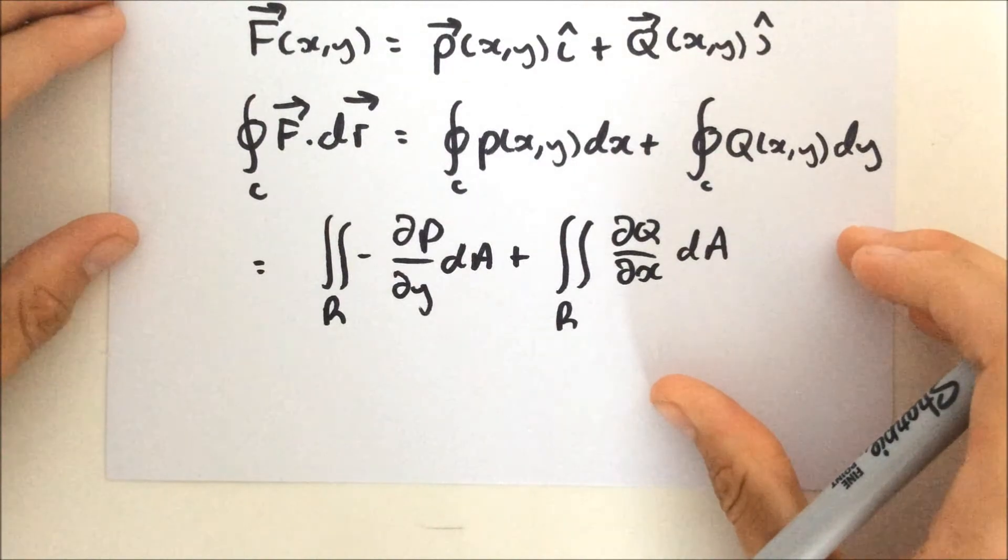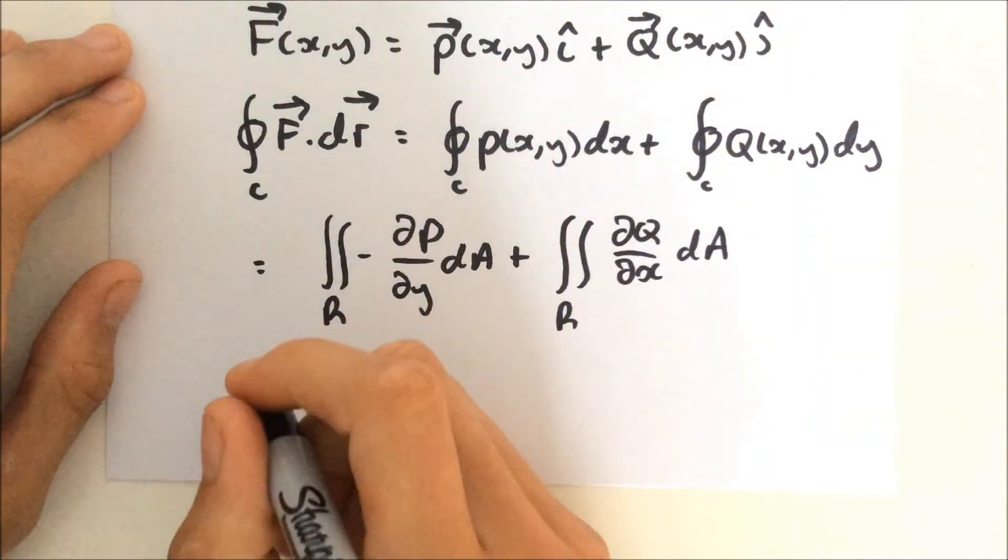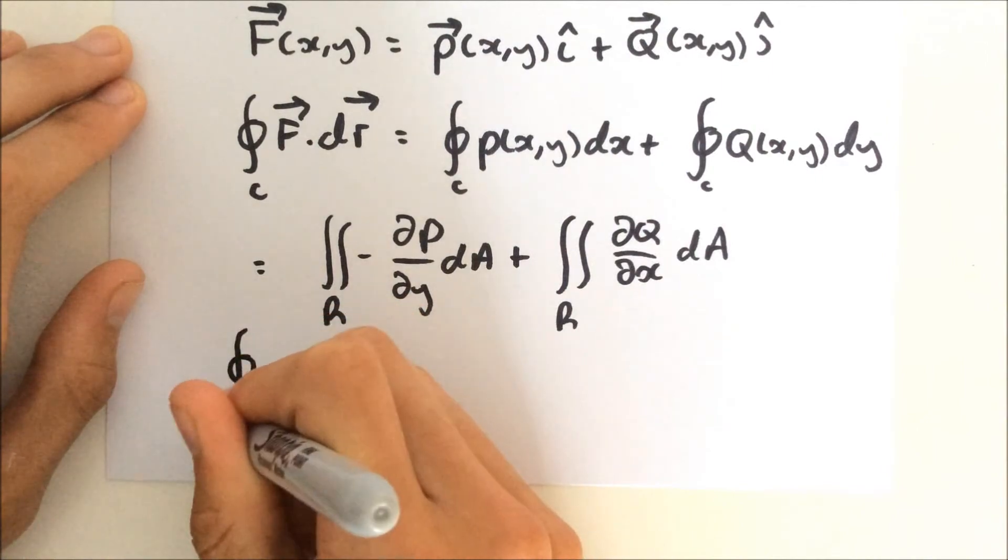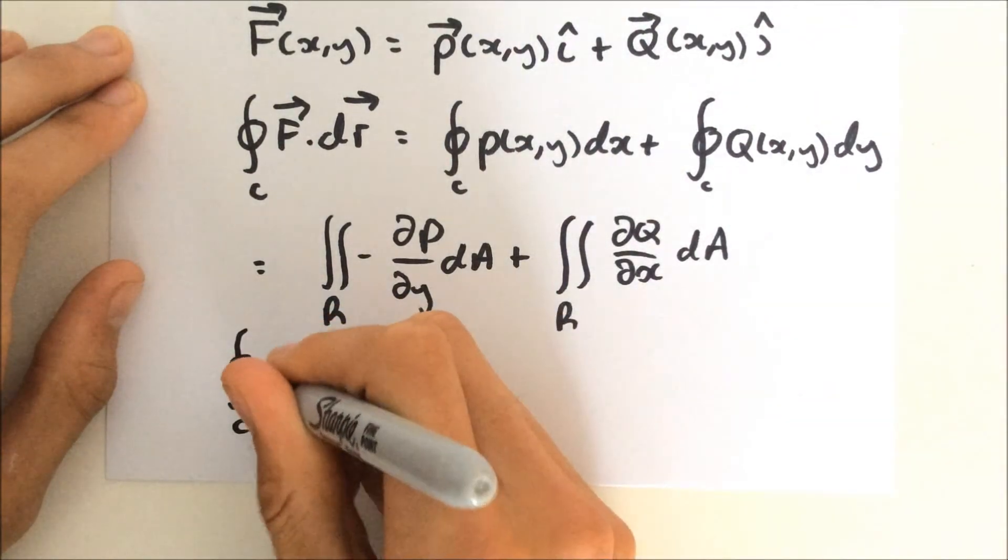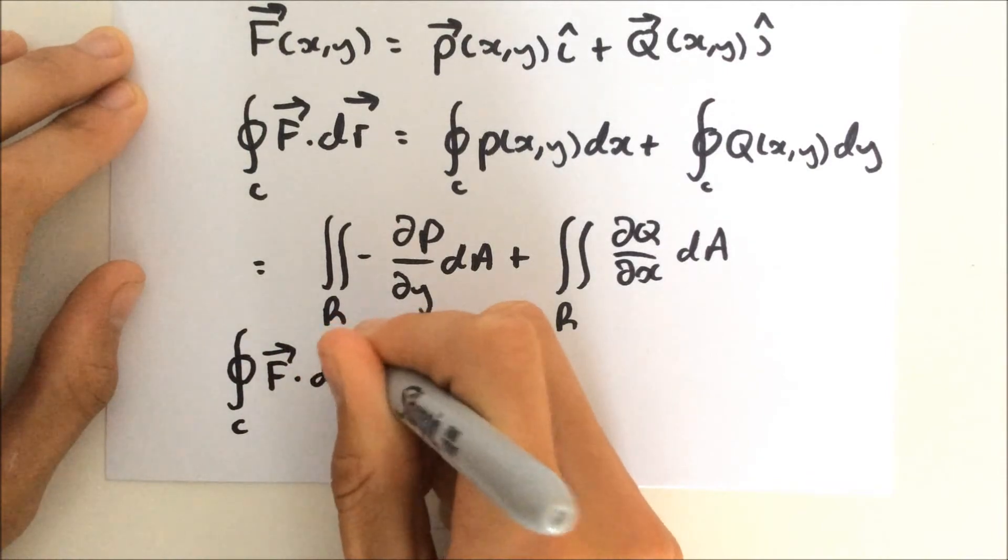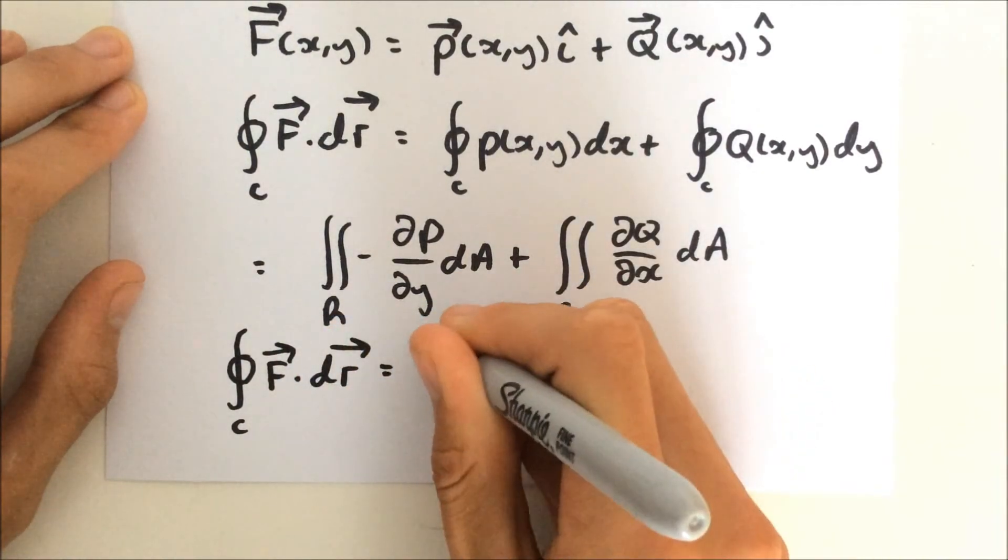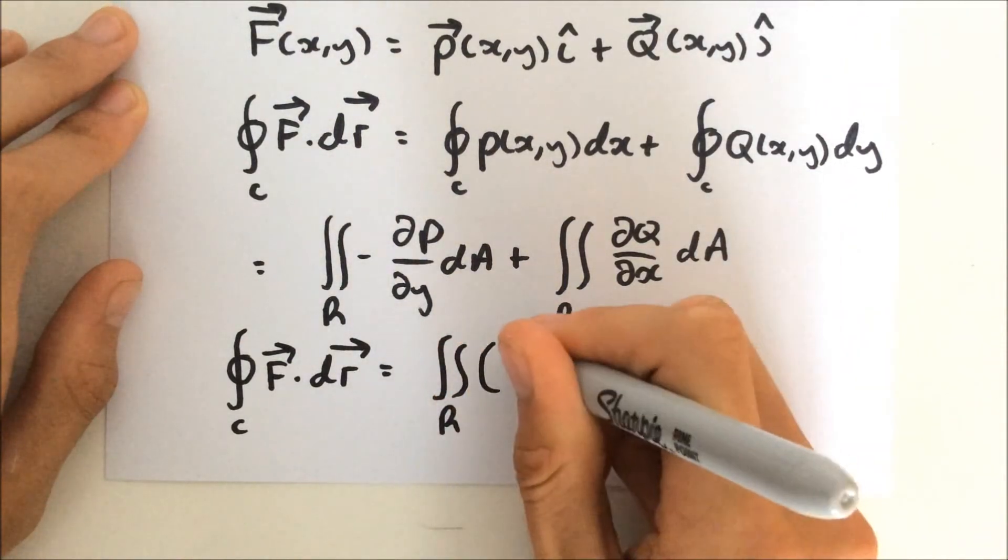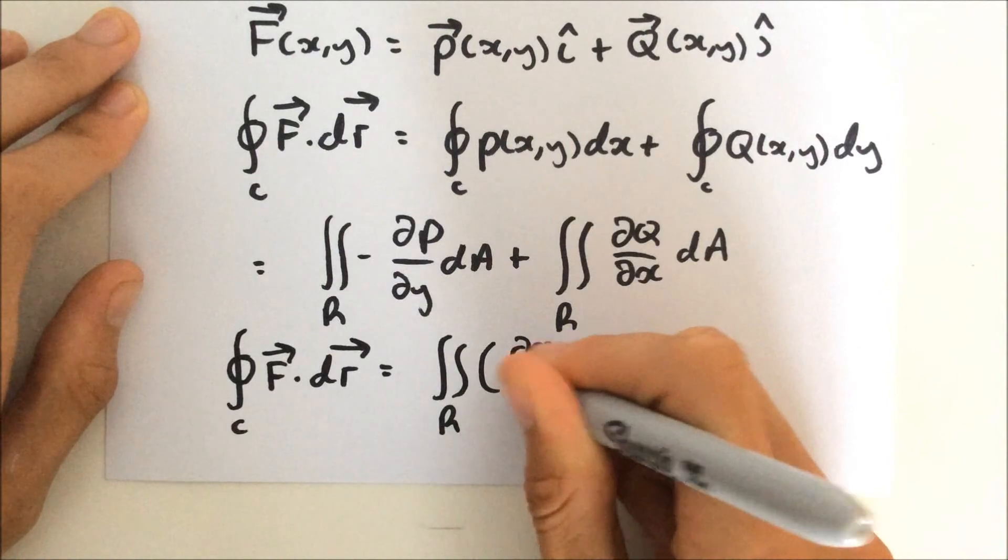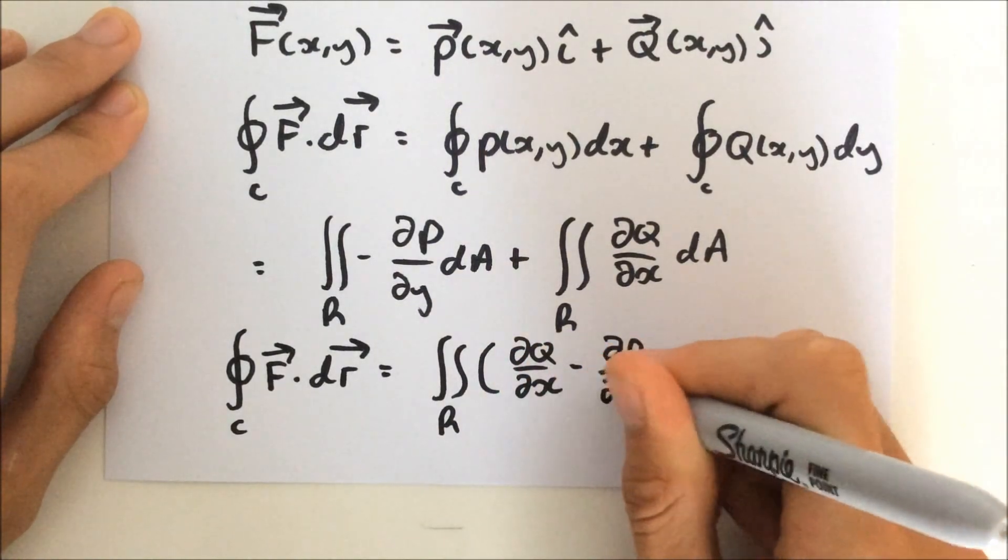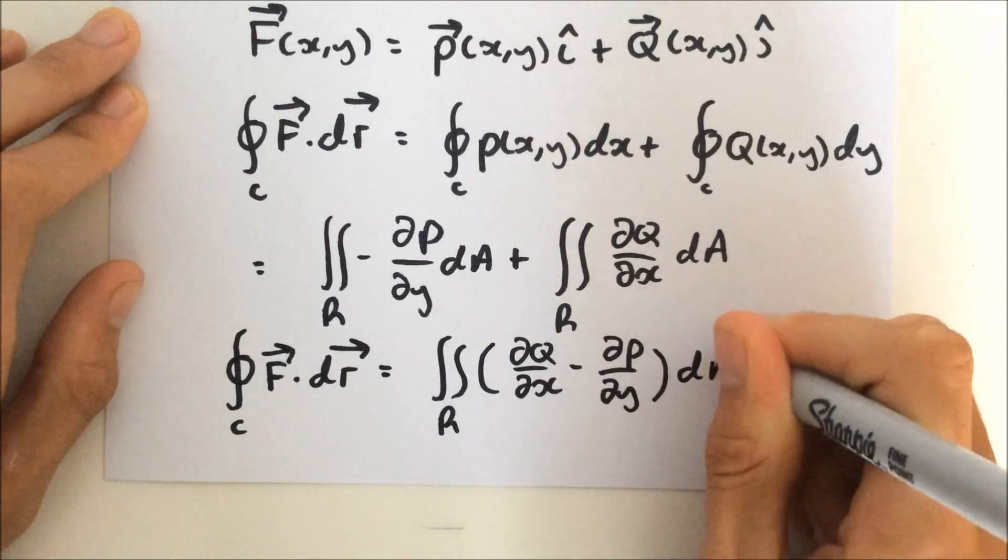So, we now know this is going to equal the double integral over region R negative dP/dy dA plus dQ/dx dA. And it should be quite easy now to come to the conclusion of Green's theorem, which says the closed line integral of our vector field with x and y components is related to the volume under some surface.